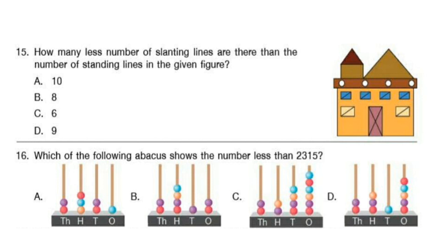Question 16. Which of the following abacus shows a number less than 2315? The correct answer is option C. The number shown is 2246, which is less than 2315.